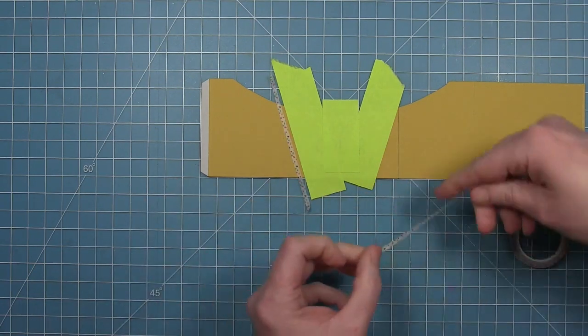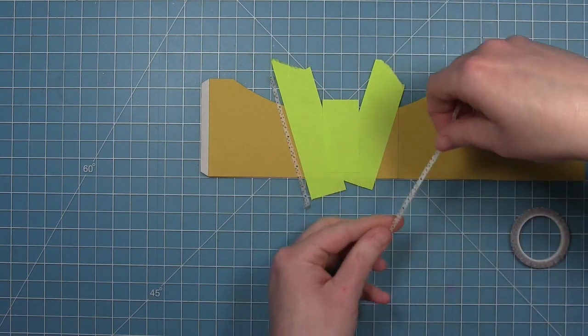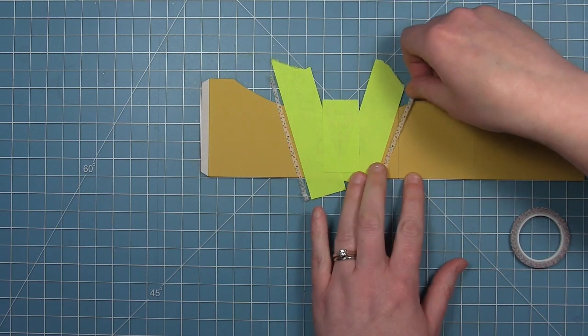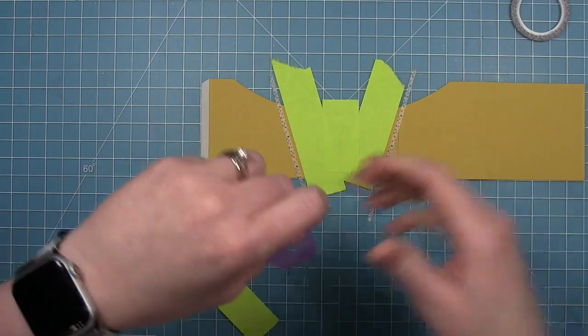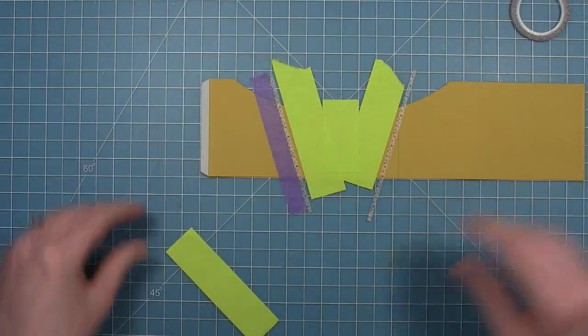I'm also using this really thin washi tape here. And this is going to leave me a very thin stripe of yellow.